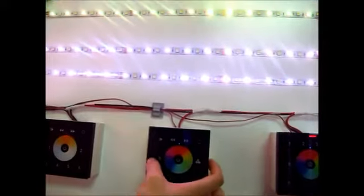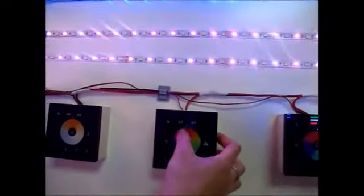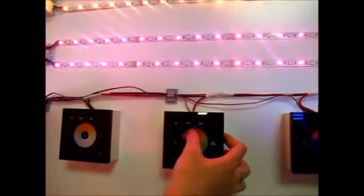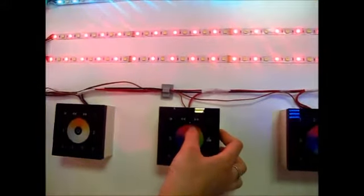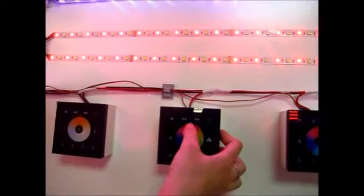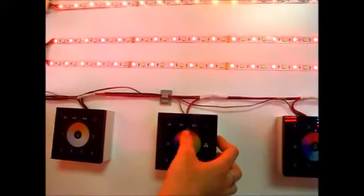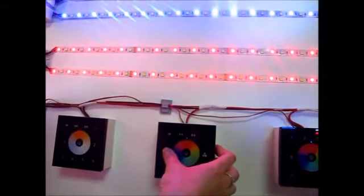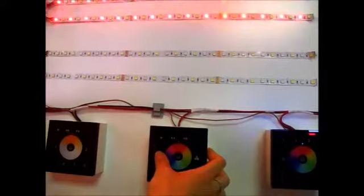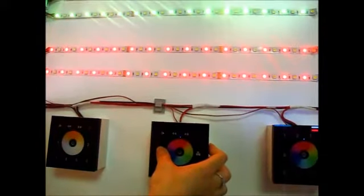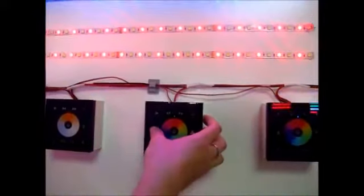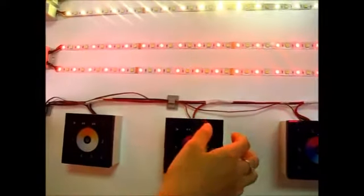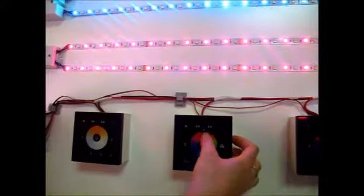This one is the save button. Say if you like the red, red color. Just touch the color wheel and choose the red. Then short press, short press S. Sorry, long press S about three seconds.